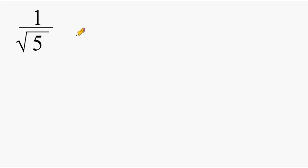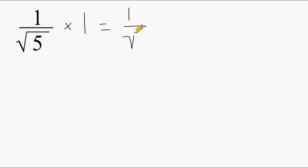The first thing we have to understand is that if you multiply anything by 1, that value still stays the same because anything times 1 is itself. So basically to rationalize our denominator, we're doing the same thing — except instead of writing 1, we're going to write 1 in a different way.